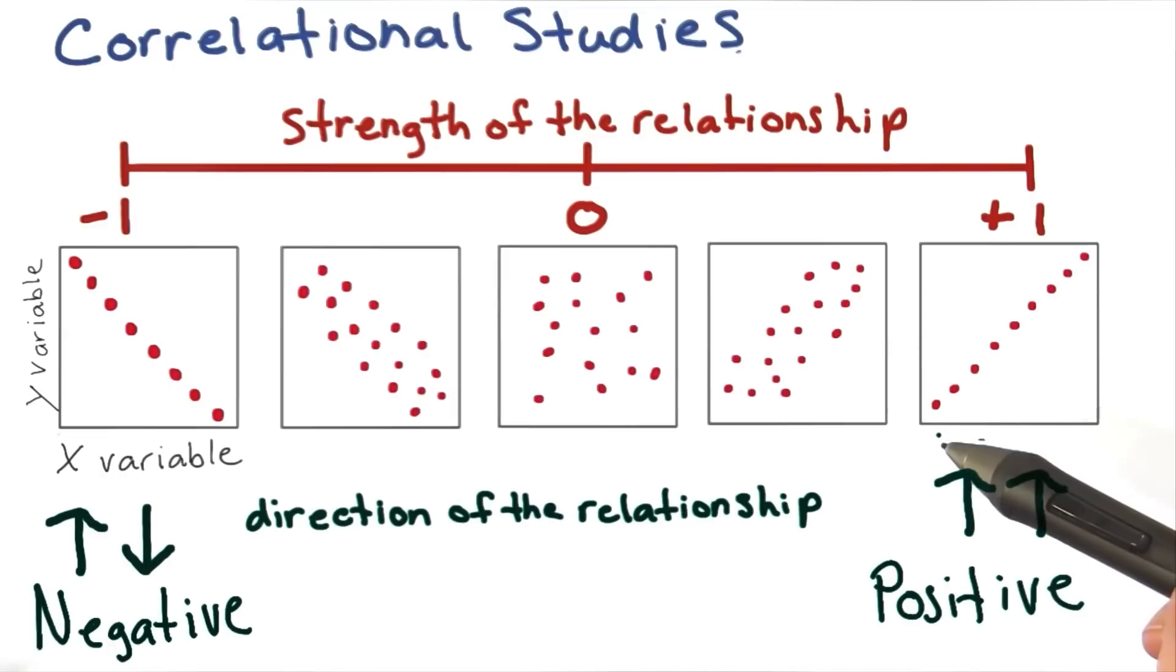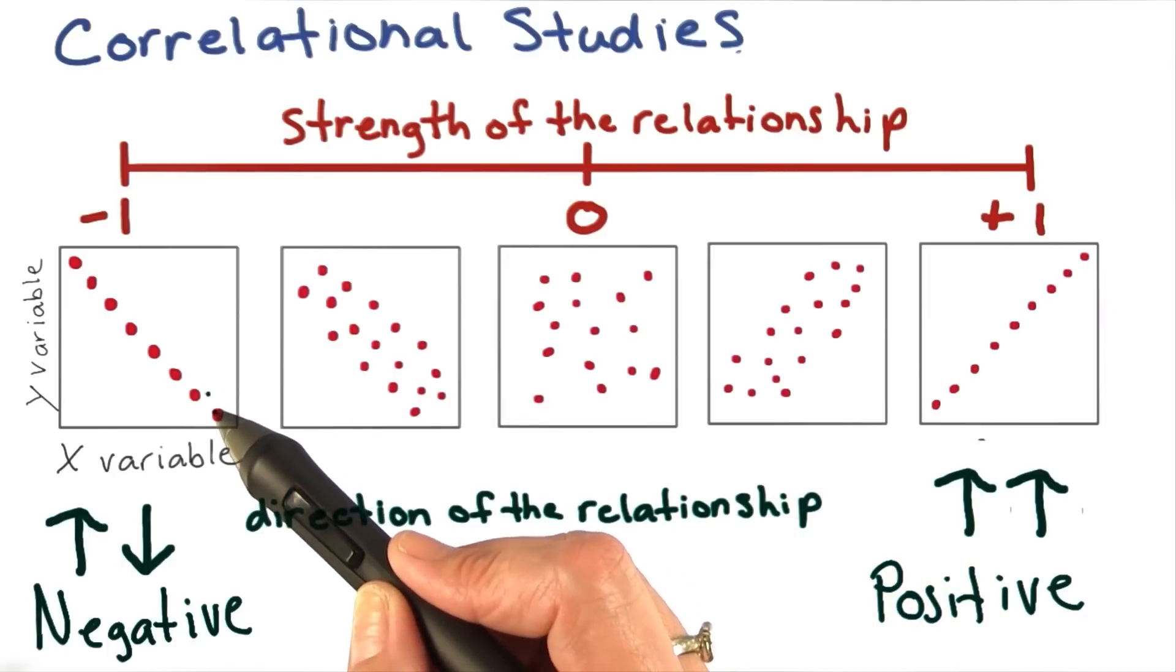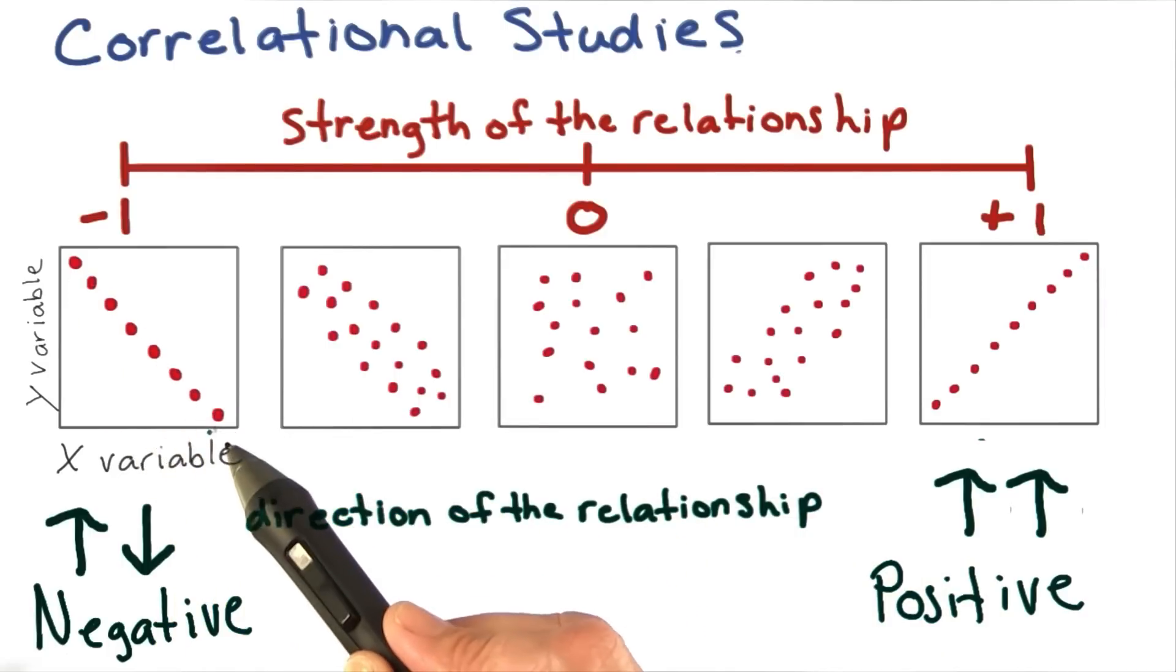In a positive correlation, as scores increase on the x variable, they also increase on the y variable. This would be an example of a perfect positive correlation, plus 1. Here, we have an example of a perfect negative correlation, minus 1.